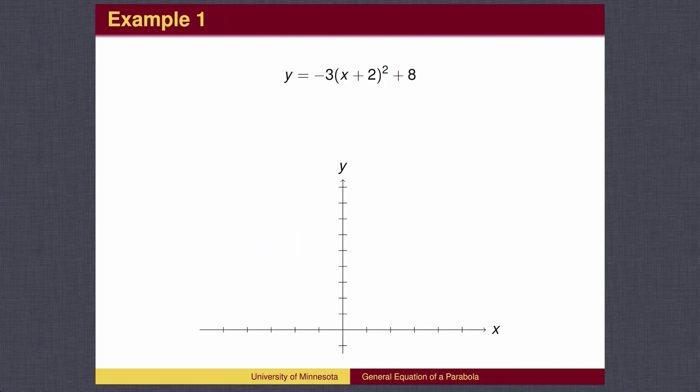Let's graph this parabola. It is a y equals x squared parabola, so it would point upward, except for the negative sign, so it will point downward instead.